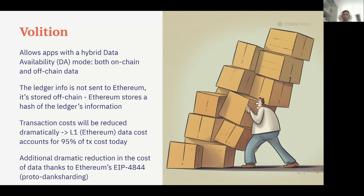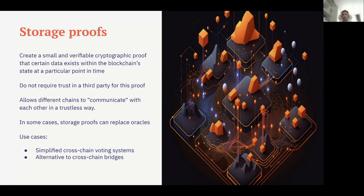Another upcoming feature is storage proofs. The idea is that you can create a small, verifiable proof that certain data exists on the blockchain at a particular time, without trusting third parties. This will allow trustless layer-two cross-chain communication and enable use cases not currently possible — such as cross-chain voting or alternatives to portions of bridges. Storage proofs aren't live yet but are coming soon and will be a significant development to watch.